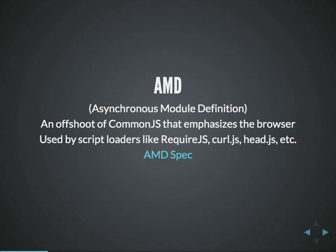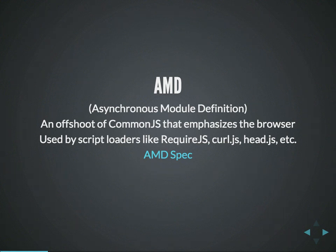I'm including a link to the AMD specification — it's hosted on GitHub and it's a really short read. Don't be intimidated; unlike W3C specs that are long and poorly written, the AMD spec and the CommonJS spec are each about a page and very easy to understand. Just think of AMD as the offshoot of CommonJS with a little bit of extra special sauce to facilitate asynchronous file loading in the browser.